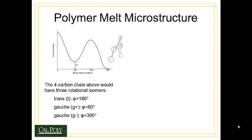Welcome to part two of topic two on polymer microstructures. In this section we're going to look at polymer melt microstructures and how the polymers are organized within a liquid molten state. When we're in the polymer melt, the polymer is at a very high temperature and therefore has a large amount of thermal energy permitting large-scale rotations and translations of the polymer molecules.